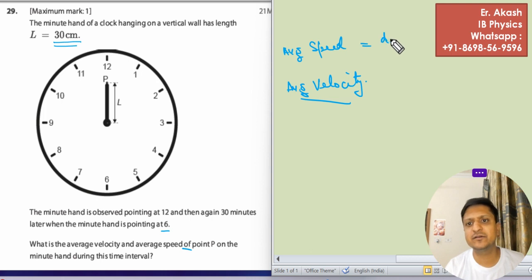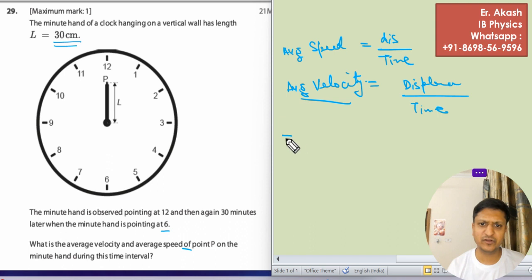Speed is distance upon time and velocity is displacement upon time. So distance is the circumference pi r and the radius is 30.